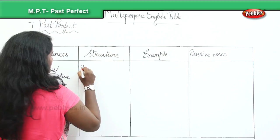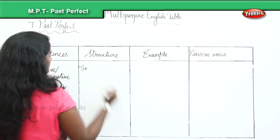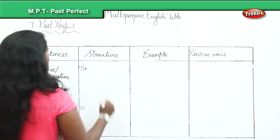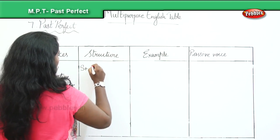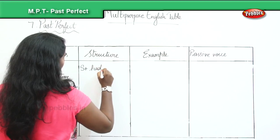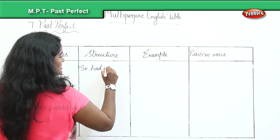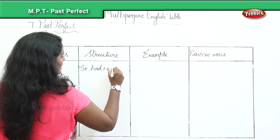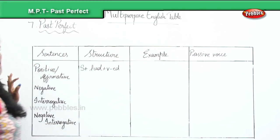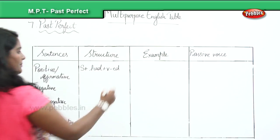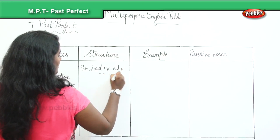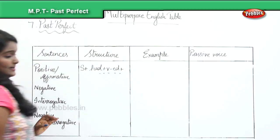For the positive sentence: subject plus had plus the ed form of the verb plus the remaining part of the sentence.